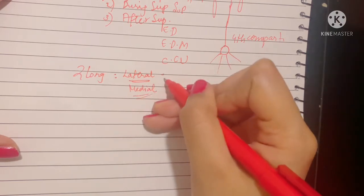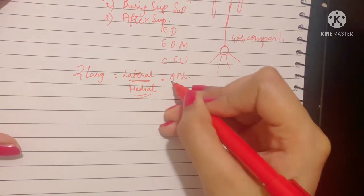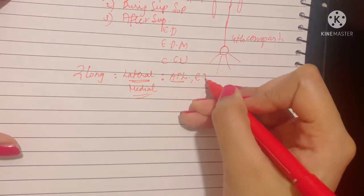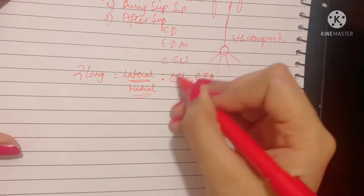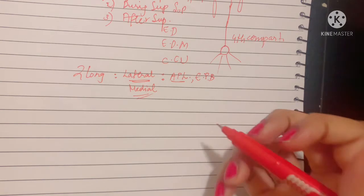The lateral branch supplies the abductor pollicis longus and extensor pollicis brevis, which both were forming, if you remember, the anatomical snuffbox anterior boundary, along with being the most lateral compartment tendons of the extensor retinaculum.